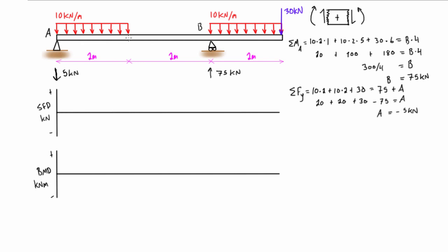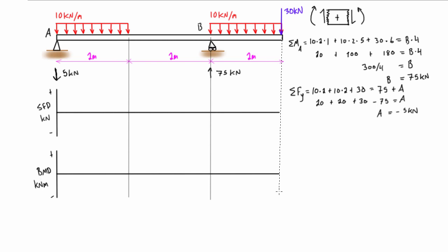Now we can set up our shear force diagram and bending moment diagram below the free body diagram. We'll add grid lines to mark the points of interest — these are any points where we have a point load or where a distributed load starts, stops, or changes. In this case, one point has both a distributed load starting and a point load occurring at the same location.